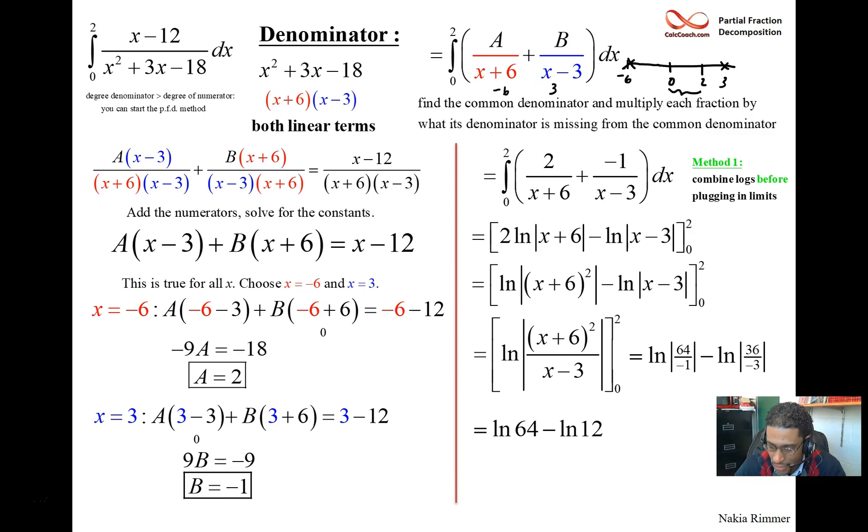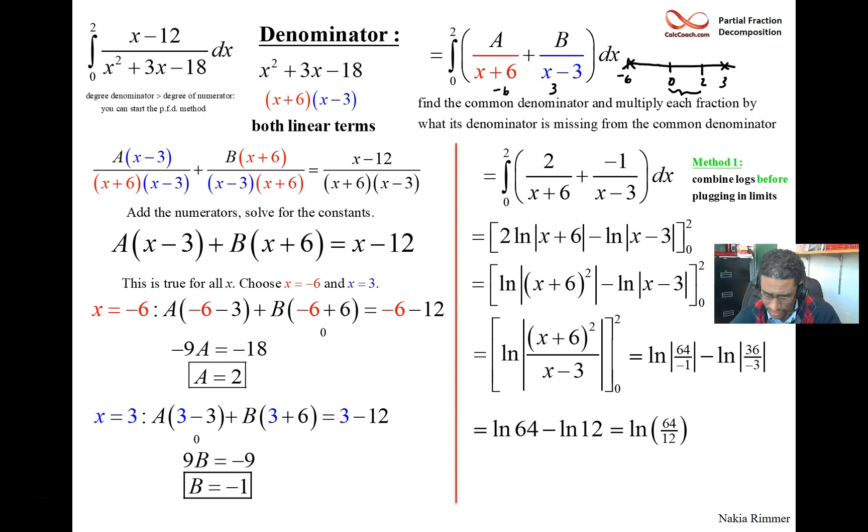And now we want to combine these, of course, into one fraction, one natural log by division, and then we can reduce. And so we have the natural log of 16 thirds when we divide out by 4.